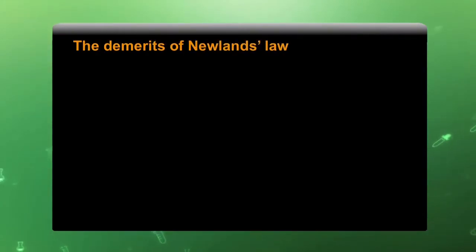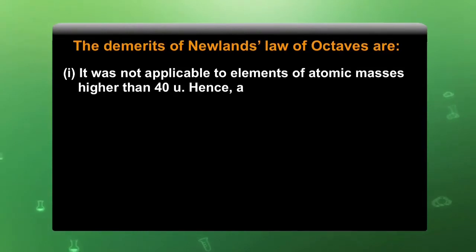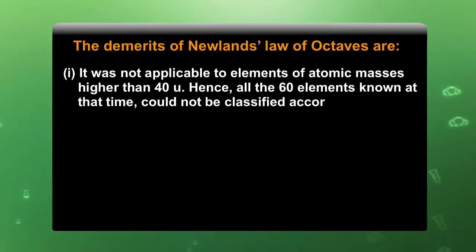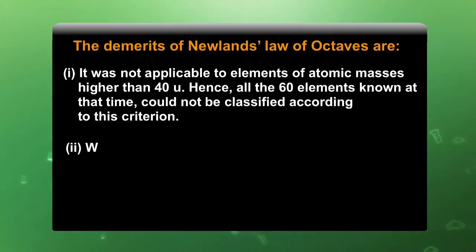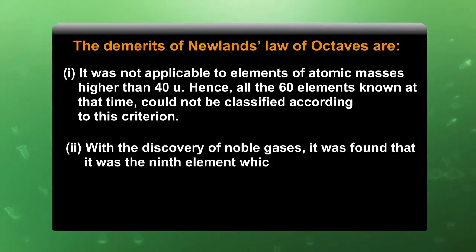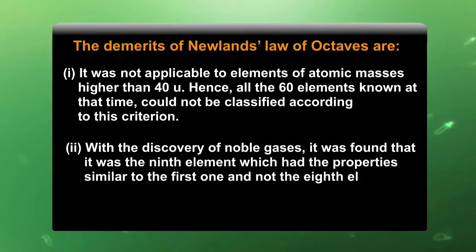The demerits of Newlands' Law of Octaves are: it was not applicable to elements of atomic number higher than 40. Hence, all the 60 elements known at that time could not be classified according to this criterion. With the discovery of noble gases, it was found that it was the ninth element which had properties similar to the first one, and not the eighth element. This resulted in rejection of the very idea of octaves.